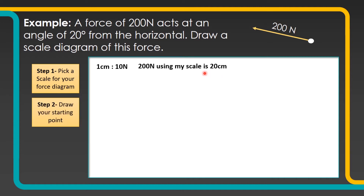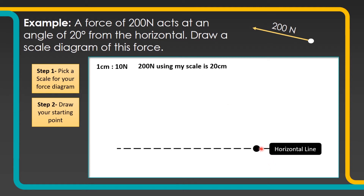The next step is to draw your starting point. I'm going to draw my starting point down in the bottom right-hand corner because I know my force arrow is going to go upwards to the left. I've thought carefully about where I draw that point to make sure I leave myself enough room to draw my arrow.